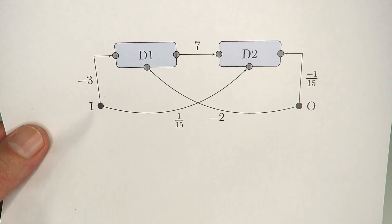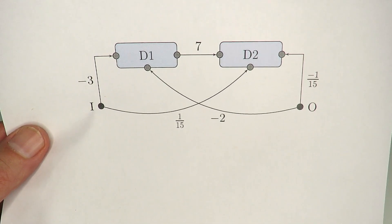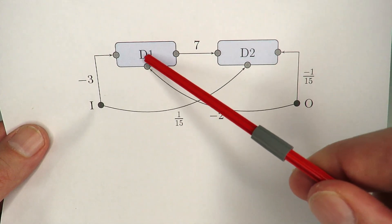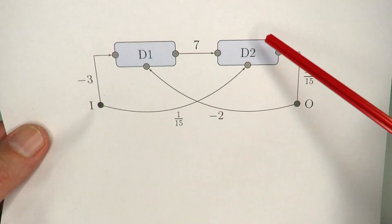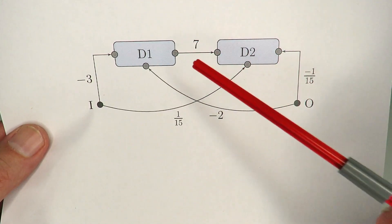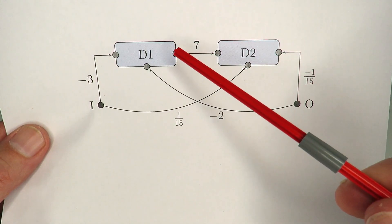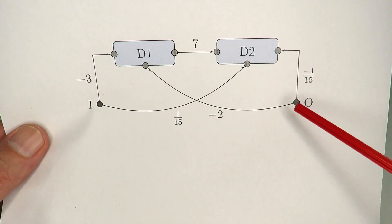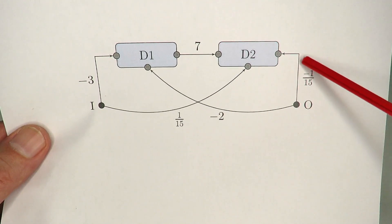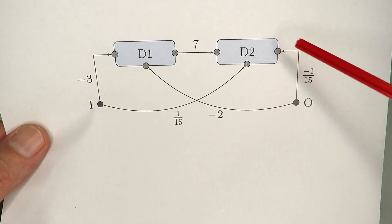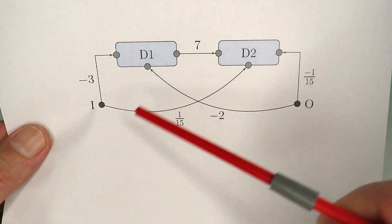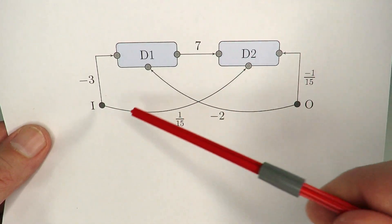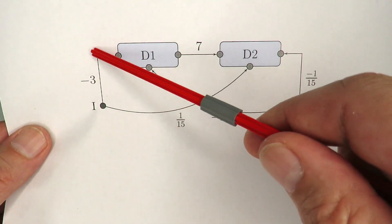Putting all those figures back onto the diagram: we have differentials D1 and D2 with gearing ratios between the axles — 7 in one direction, −1/15 in another, and −2 over here.